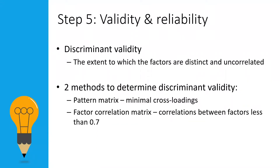Validity refers to how accurately an instrument measures what it is intended to measure. If an instrument shows high validity, it means that the concepts studied are accurately represented by the items of the instrument. In this video, we are focusing on discriminant validity, which is the extent to which the factors are distinct and uncorrelated. A good instrument should display good discriminant validity, where the factor is able to account for more variance in the observed variables rather than other constructs within the conceptual framework.